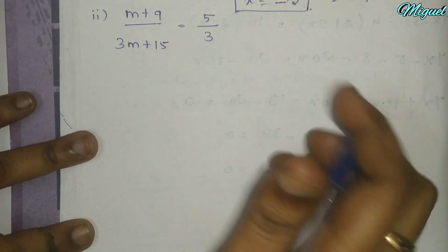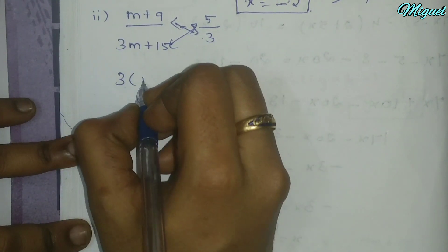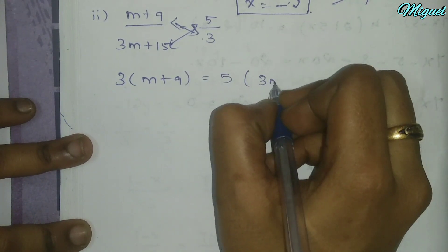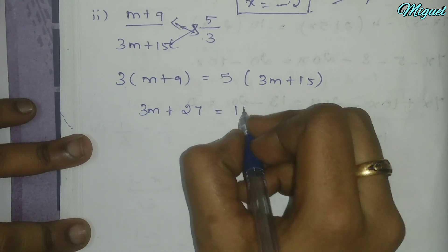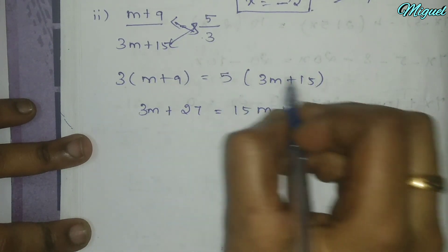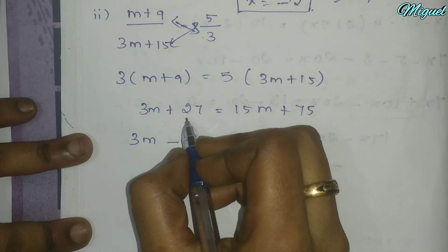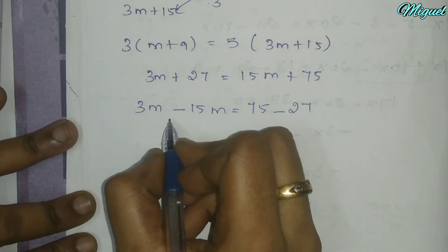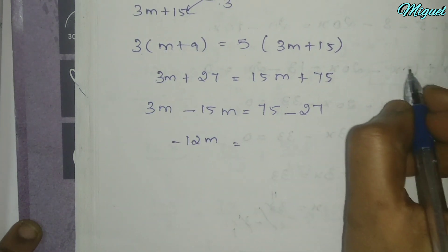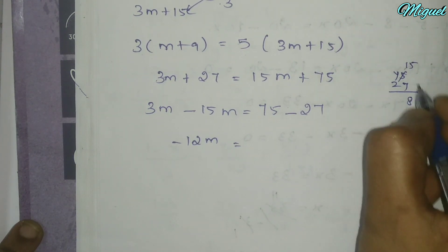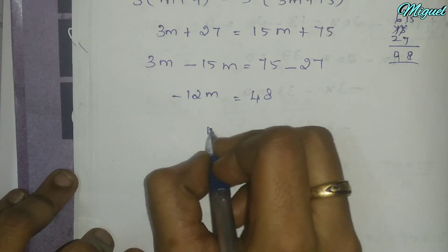Subdivision number 2: find m where the value will be minus 6. We have 3 into (m plus 9) equals 5 into (3m plus 15). Multiplying: 3m plus 27 equals 15m plus 75. Transposing: 3m minus 15m equals 75 minus 27, so minus 12m equals 48. Therefore m equals minus 4.